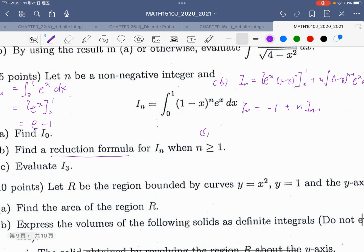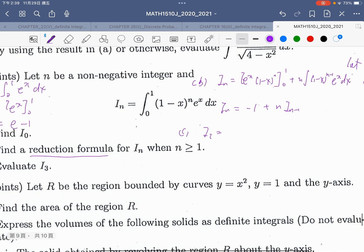For the last part, I_3. I_3, we can use the reduction formula. Minus 1 times 3, I_2. I_2, and then I_2 equals minus 1 plus 2 times I_1.